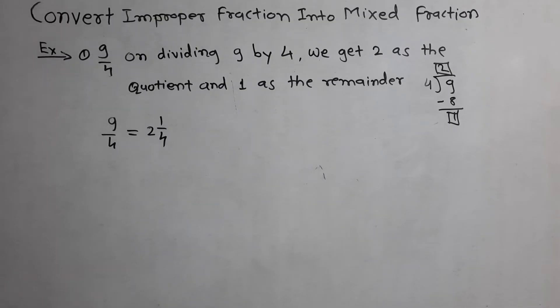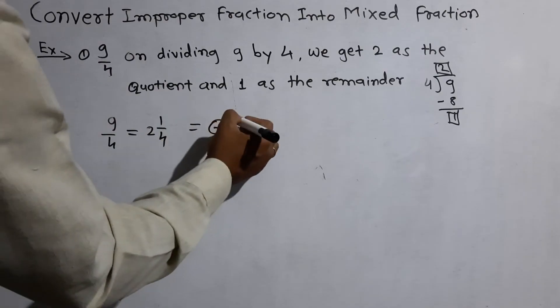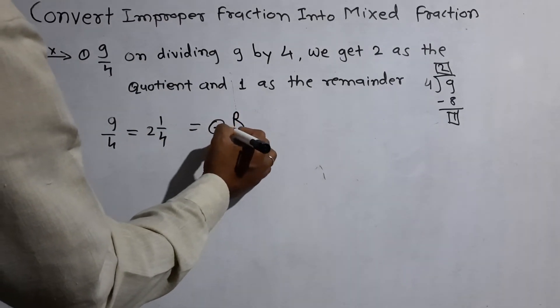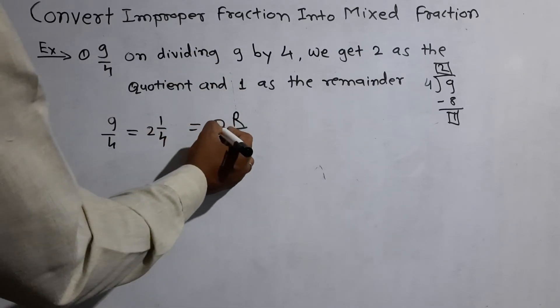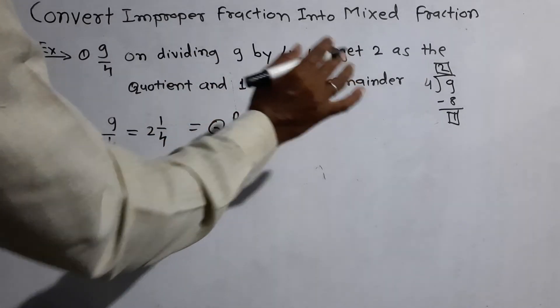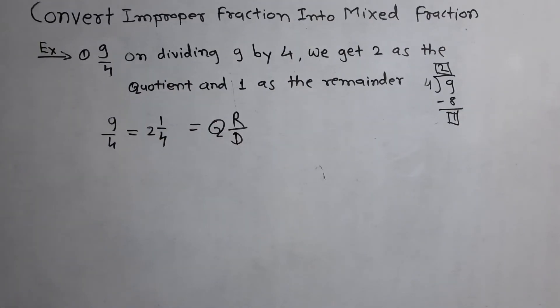It is also written in the form of Q, R by D. Q means quotient, R means remainder, and D means denominator. Denominator is 4.